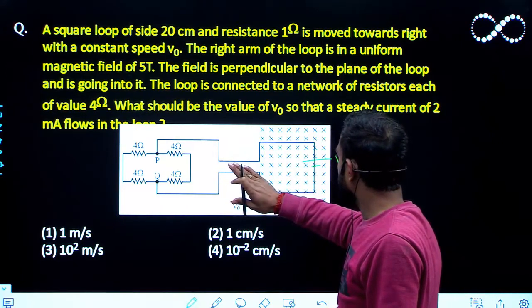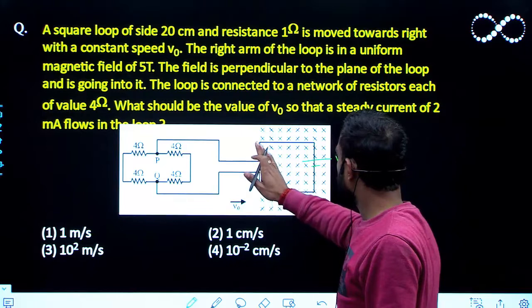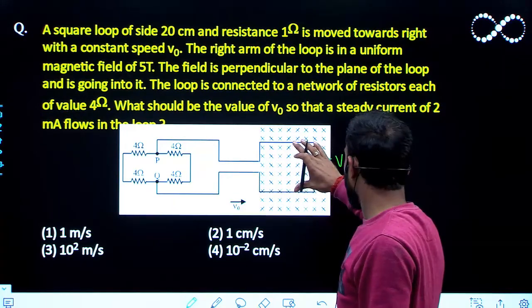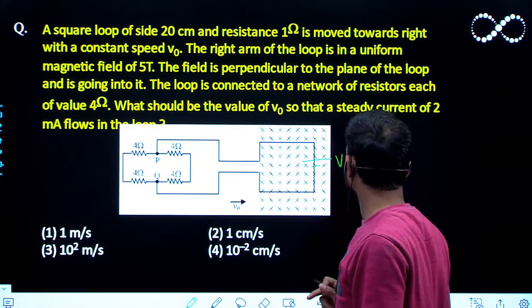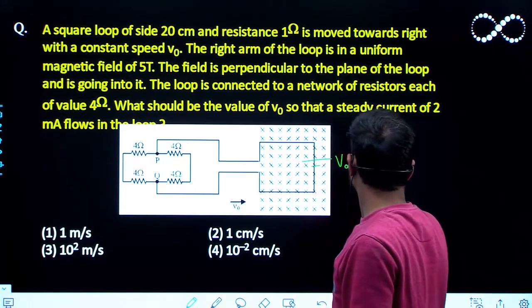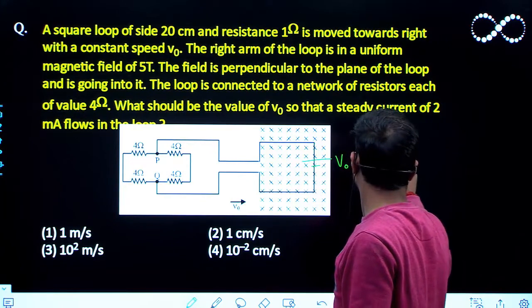It is not cutting any flux, so motional EMF due to this arm will be zero. So total induced EMF that will be V0 BL. And the resistance of this square loop is 1 ohm.